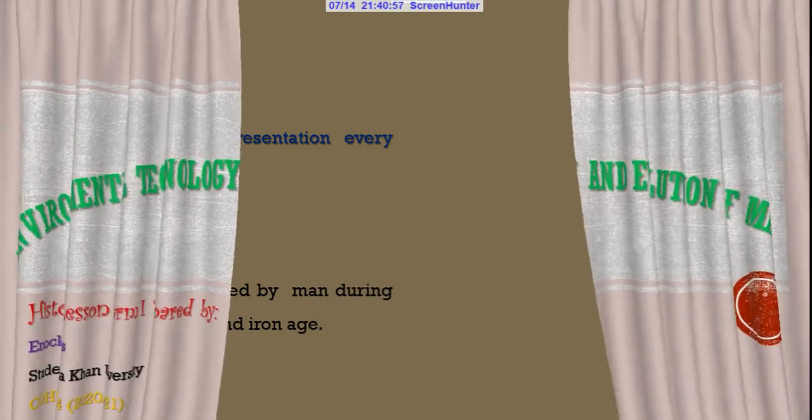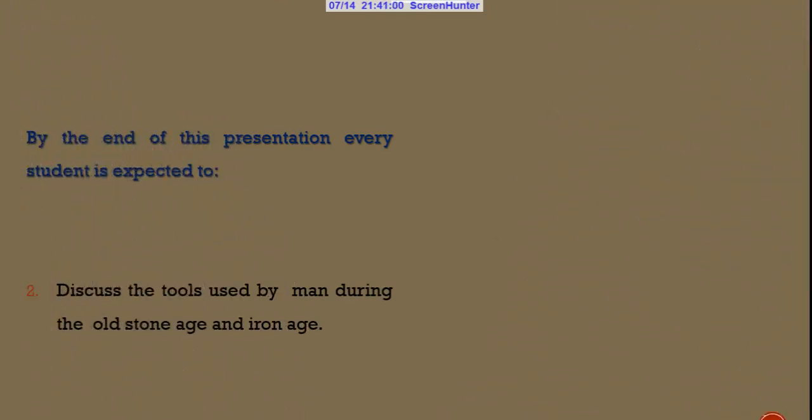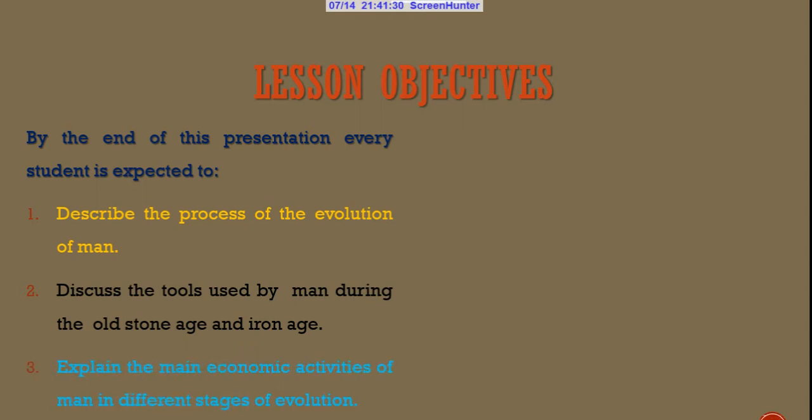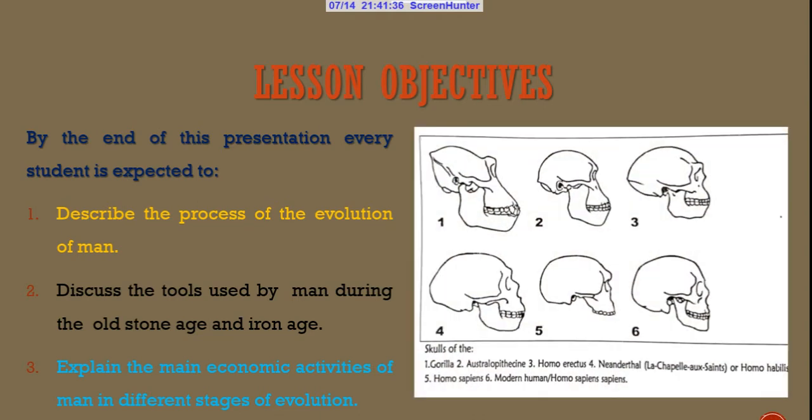Our today's lesson is guided by three objectives. First, describe the process of evolution of man. Second, discuss the tools used by man during different stages of evolution. Third, explain different economic activities that were used by man at different stages of evolution.